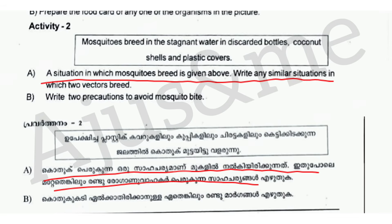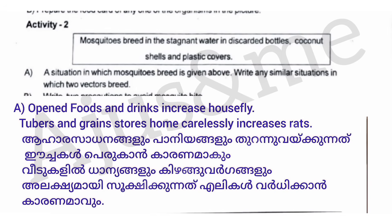Opened foods and drinks increase houseflies. Tubers and grains stored at home carelessly increase rats.